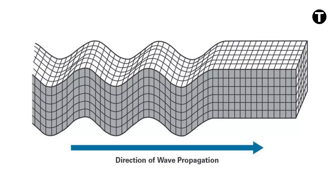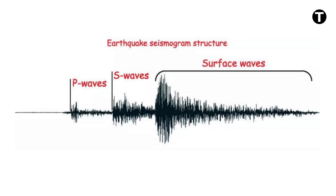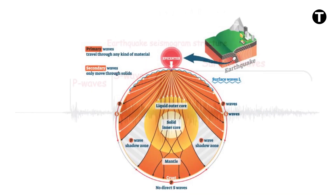S-waves move perpendicular to the direction of wave propagation. S-waves are around 60% slower than P-waves in any given material, and they appear second on seismograms. Notably, S-waves are not able to travel through liquid. Their absence in the Earth's outer core suggests that the outer core is in a liquid state.